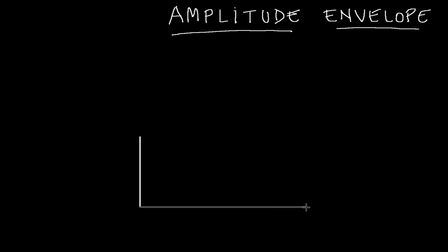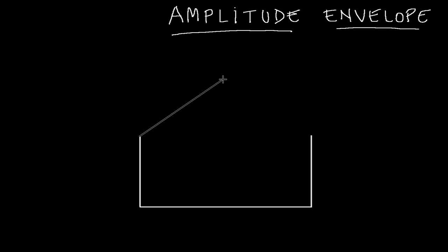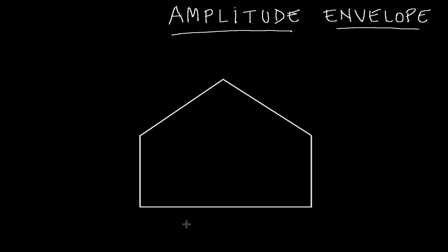There's your envelope — there's the pouch bit that you put the letter in, and then you've got the flap and the shape at the top, and you fold that over and seal it and send it. It's about this shape at the top and the angle coming up and back down from the peak.